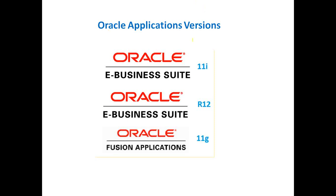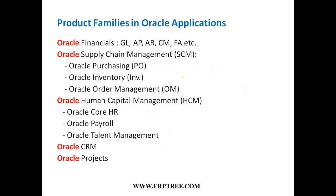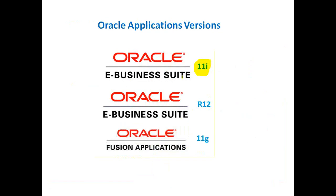The previous release is called 11i - where 'i' stands for internet, meaning these applications can be operated through the internet. This is Oracle E-Business Suite (EBS). Within Oracle E-Business Suite, we have different product families, each containing different applications supporting specific department activities. This is a very old version - Oracle has stopped providing support for it except for very large clients. There are no new implementations happening on 11i.